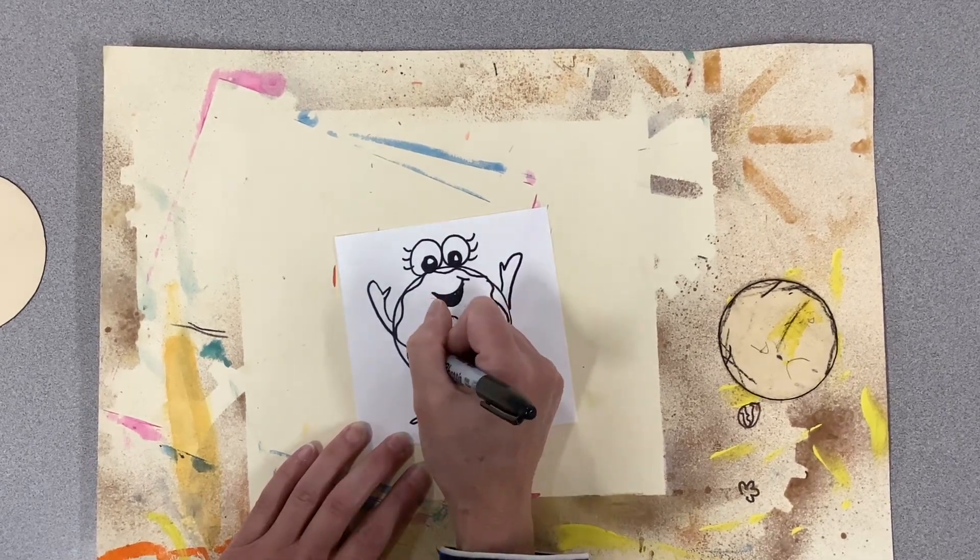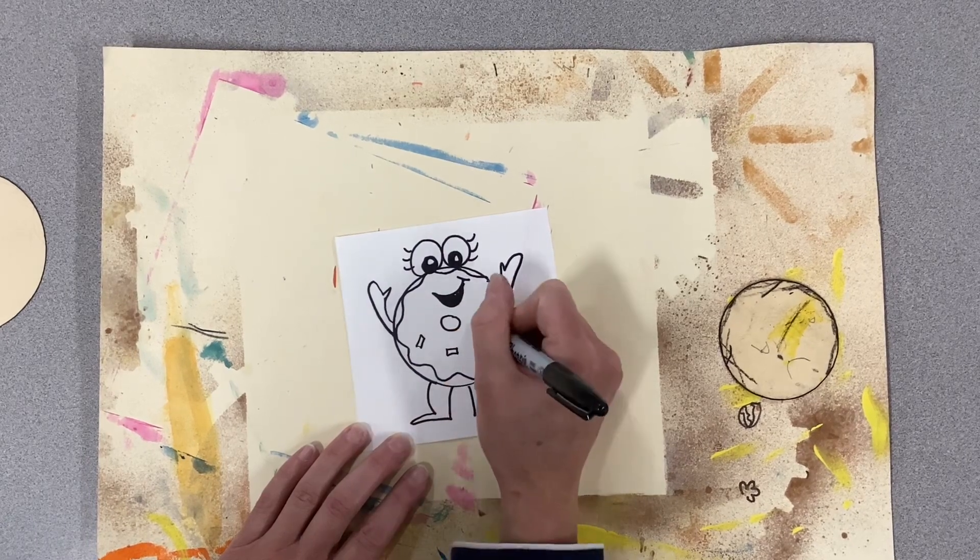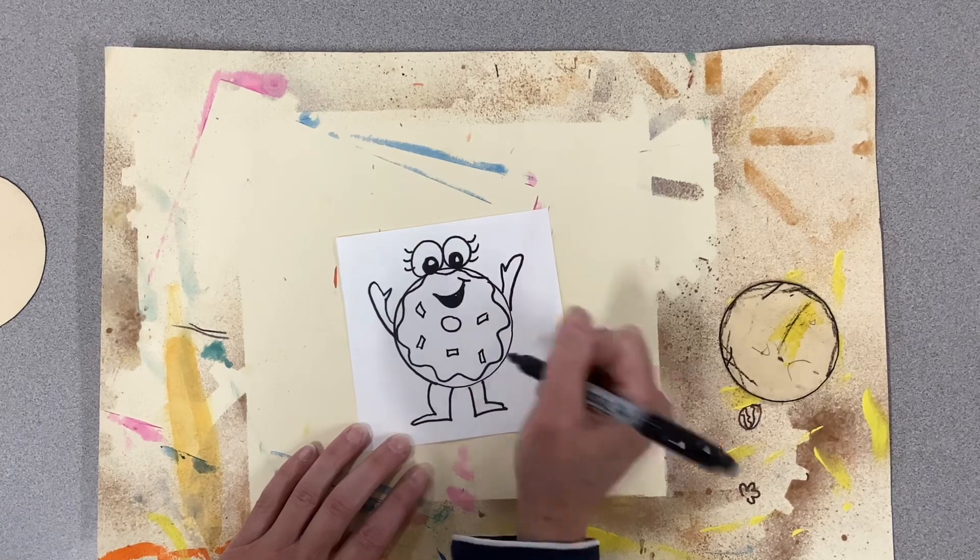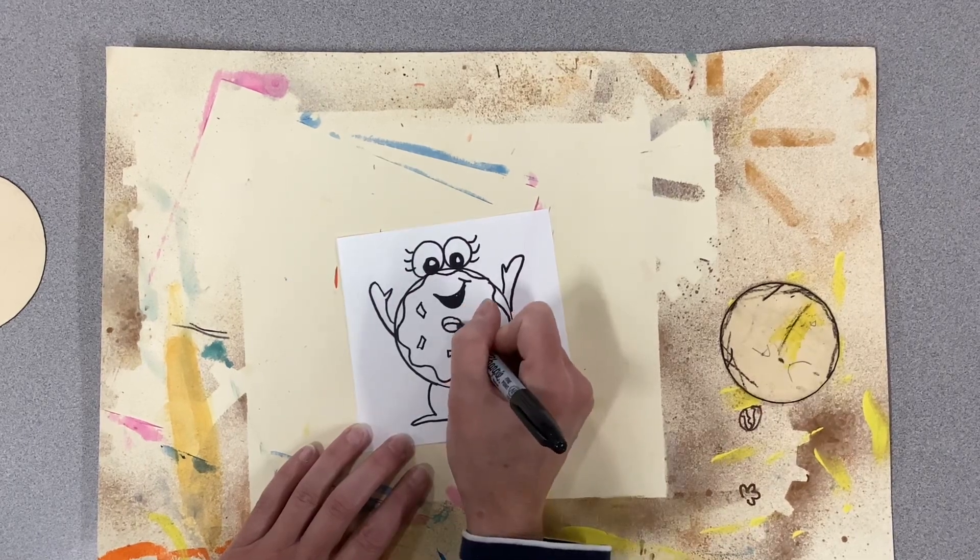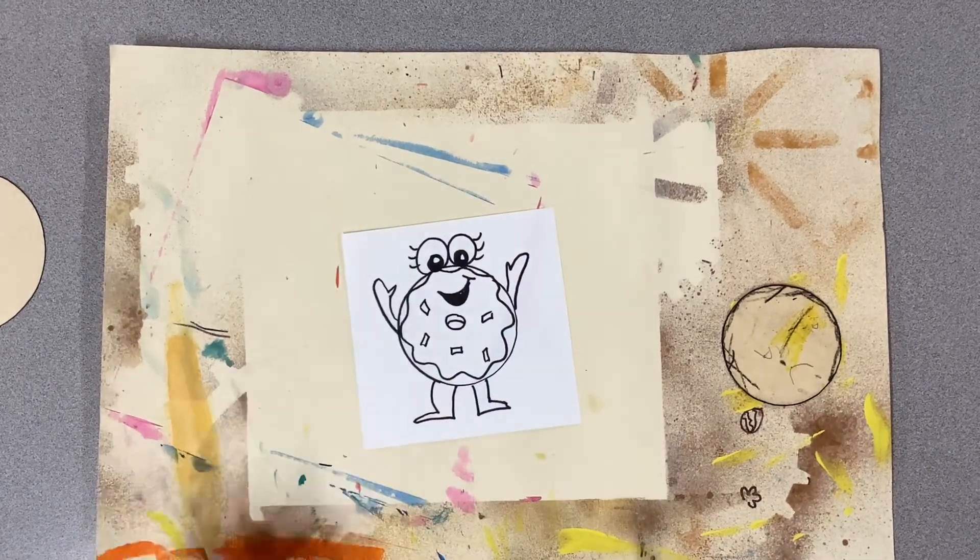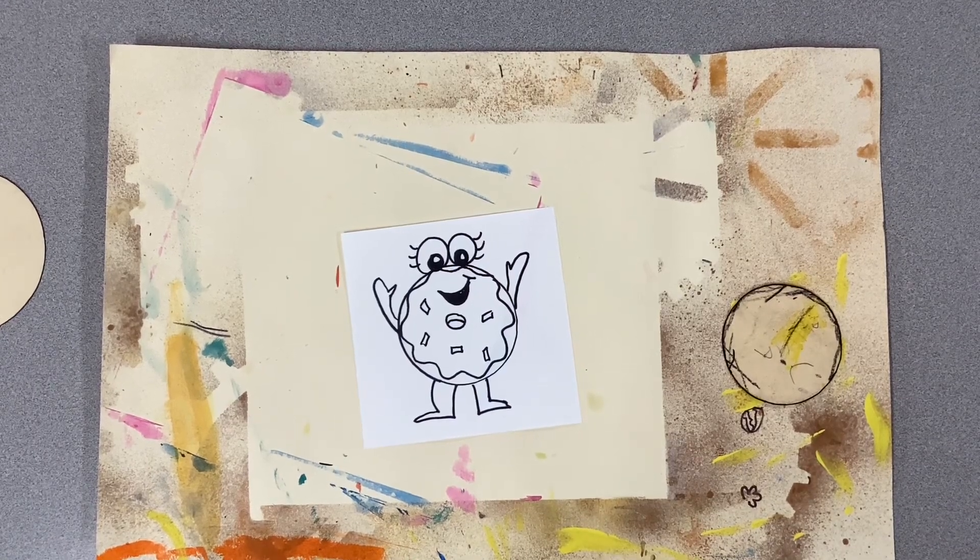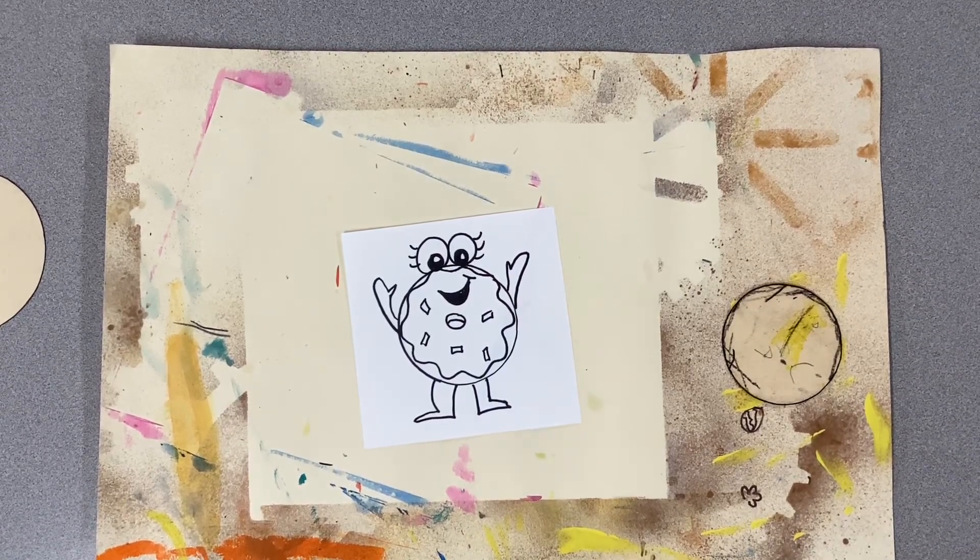And then if you wanted to add sprinkles, if you want to get fancy, you can add another little curve line to make it look three-dimensional. Now we can go ahead and color our donut creatures in.